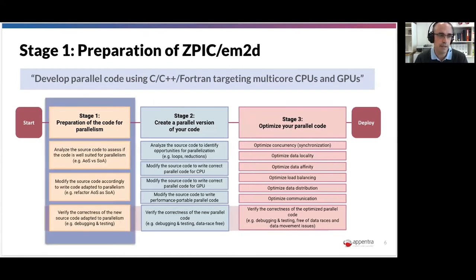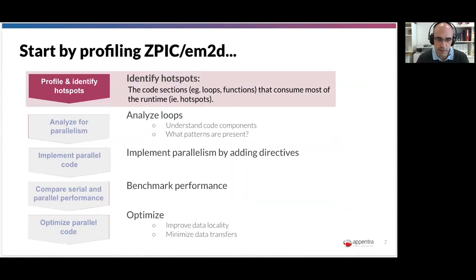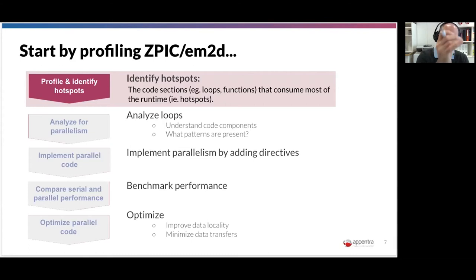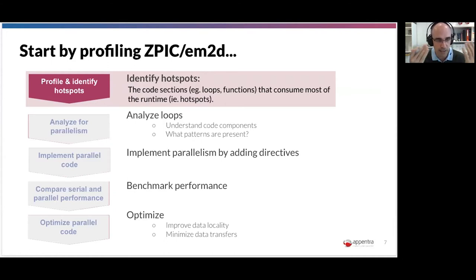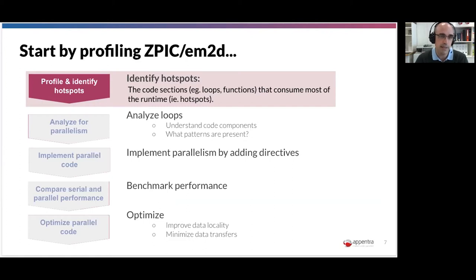Let's begin with stage one — preparation of the code for parallelism. You can do this by brute force, taking all 4,000 lines of CPIC and working on every loop. But as usual in parallel programming of scientific codes, it is always recommended to do a hotspot-guided parallelization process. Step by step: profile and identify your hotspots — those sections that consume most of the runtime. Once you have hotspots, select two to four loops where you concentrate your effort. Analyze each loop, implement parallel code, compare performance, optimize, and iterate until you get the performance you need.